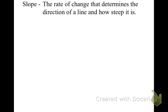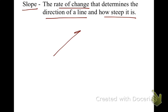First, what I need in your notes is the definition of slope. Slope is the rate of change that determines the direction of a line and how steep it is. Sometimes we have a positive slope, or sometimes we have a negative slope. Make sure this is in your notes.